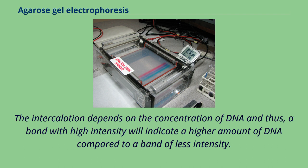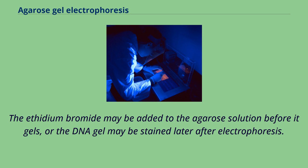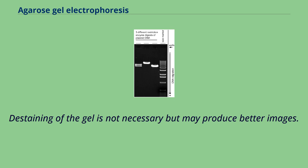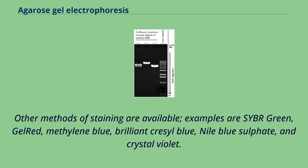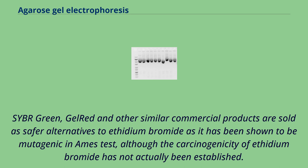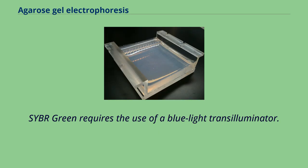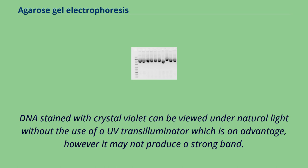Destaining of the gel is not necessary but may produce better images. Other methods of staining are available: SYBR Green, GelRed, methylene blue, brilliant crystal blue, Nile blue sulfate, and crystal violet. SYBR Green, GelRed, and similar commercial products are sold as safer alternatives to ethidium bromide, as it has been shown to be mutagenic in the Ames test, although the carcinogenicity of ethidium bromide has not actually been established. SYBR Green requires the use of a blue light transilluminator. DNA stained with crystal violet can be viewed under natural light without a UV transilluminator.